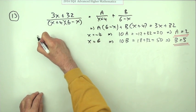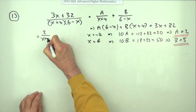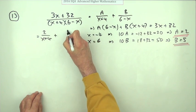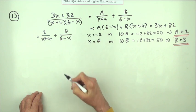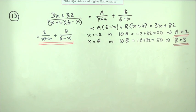So popping back to here that can be expressed as that was 2 over x plus 4 plus 5 over 6 minus x. Well that was relatively painless.